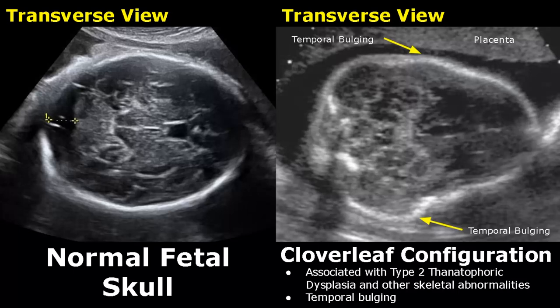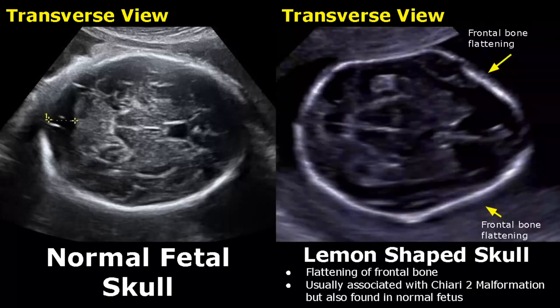A lemon-shaped skull occurs due to flattening of the frontal bone. It is usually associated with Chiari 2 malformation, but sometimes is also found in a normal fetus.